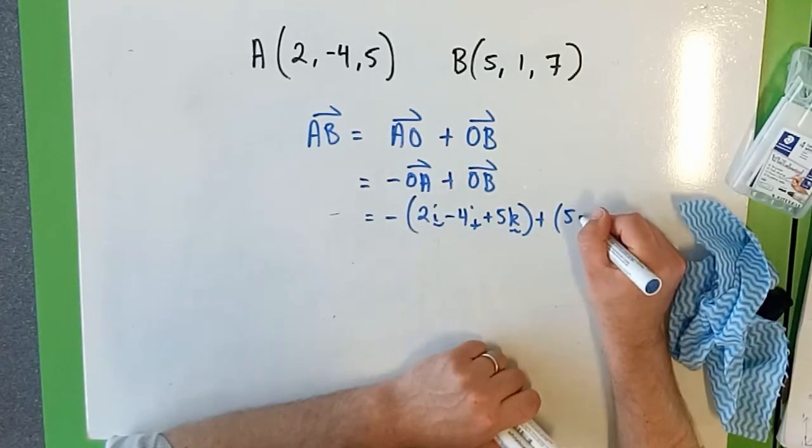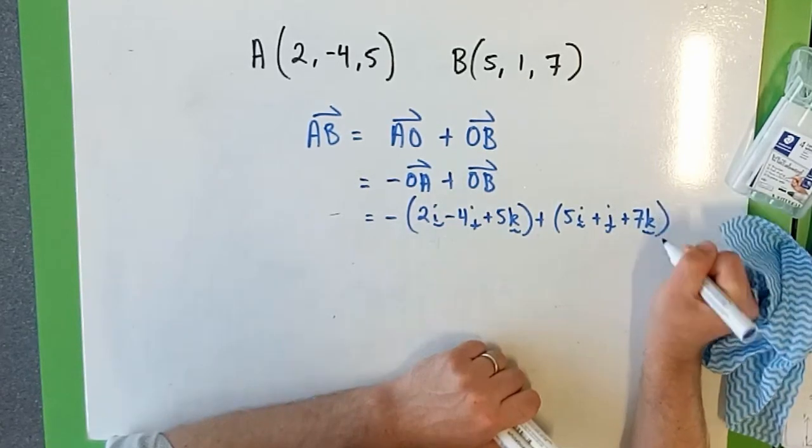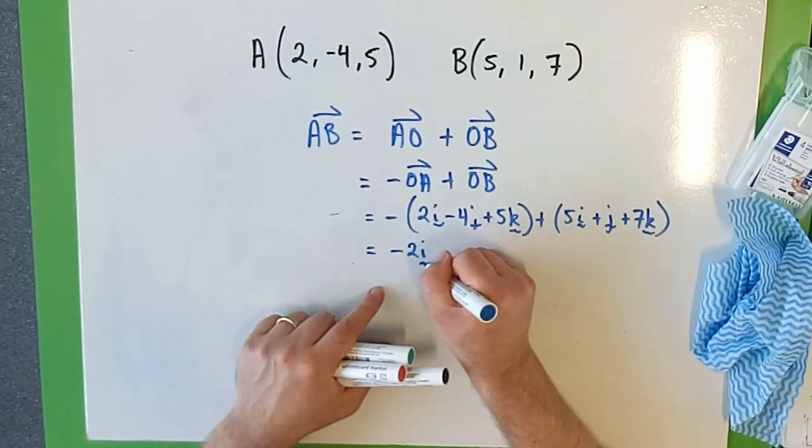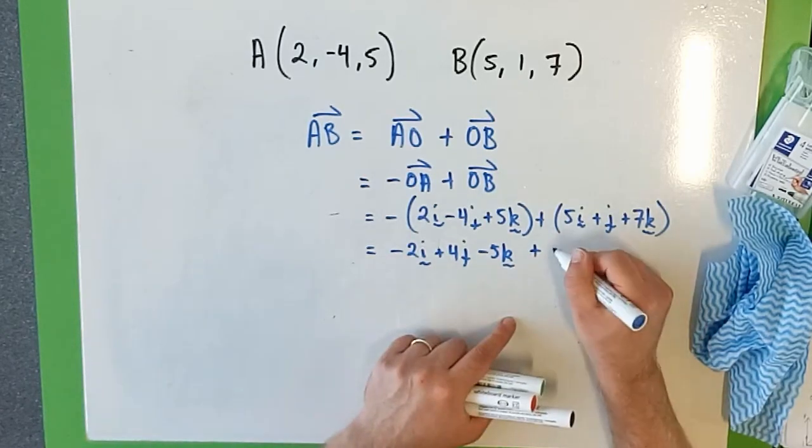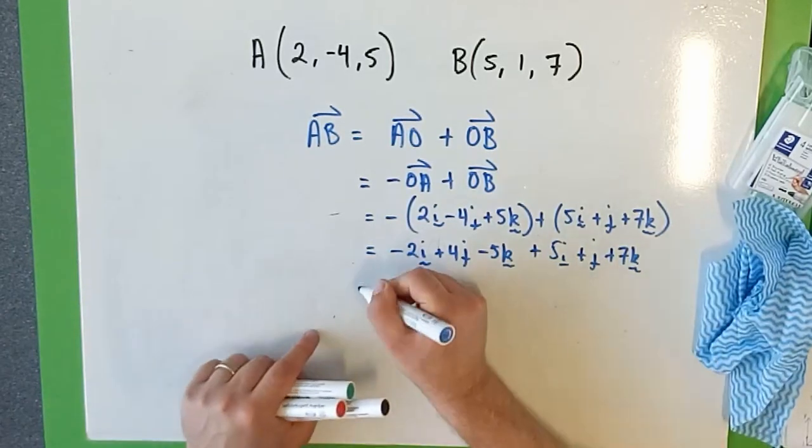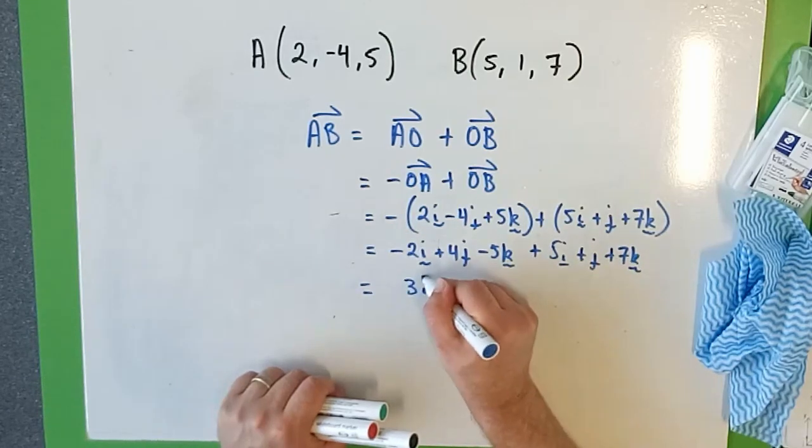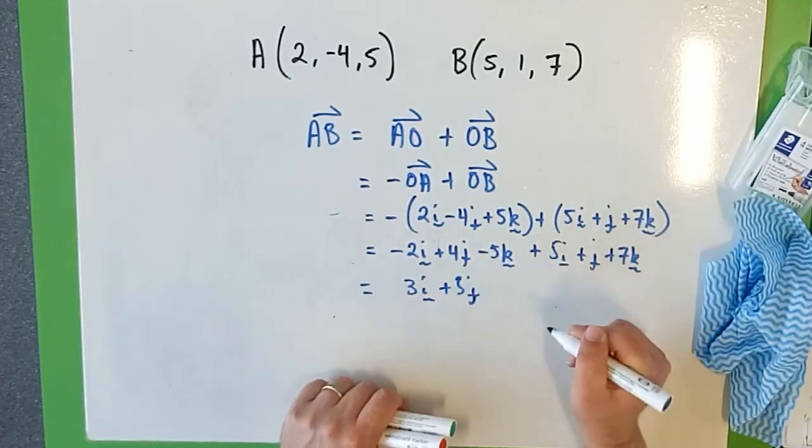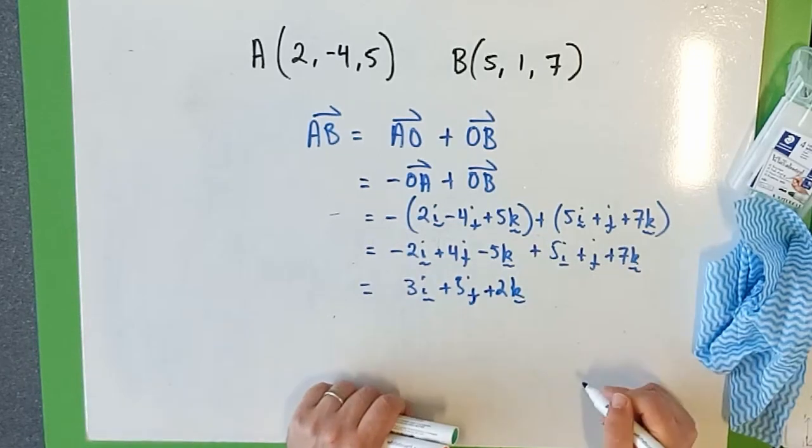Plus O to B, which is 5i plus j plus 7k. So I can expand that out, I get negative 2i plus 4j minus 5k, plus 5i plus j plus 7k. Putting that all together, what do the i's do? So my i components are 3i all together, 5j's, and how many k's? I've got 2k's.